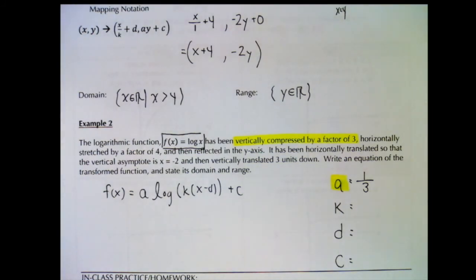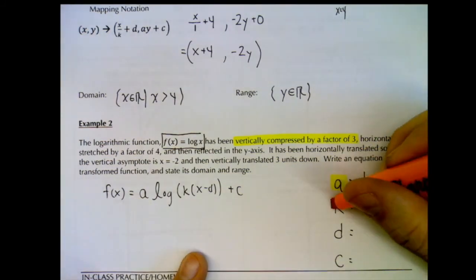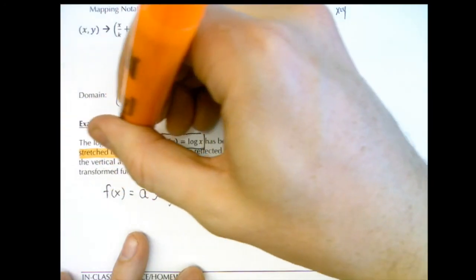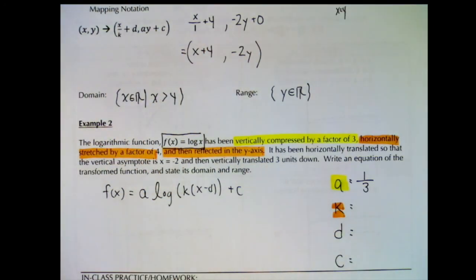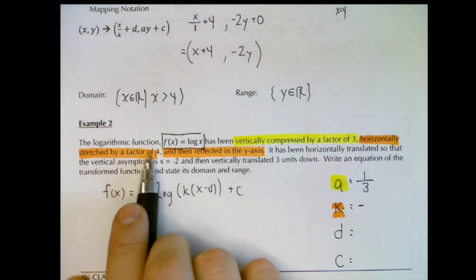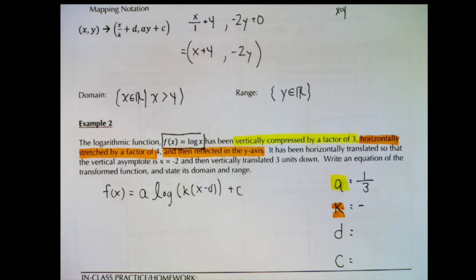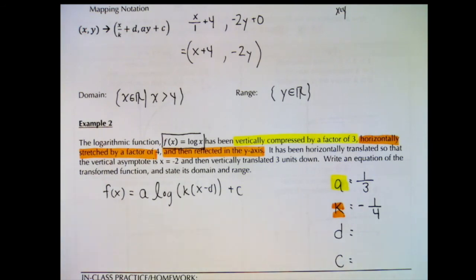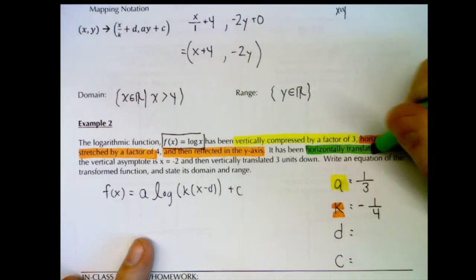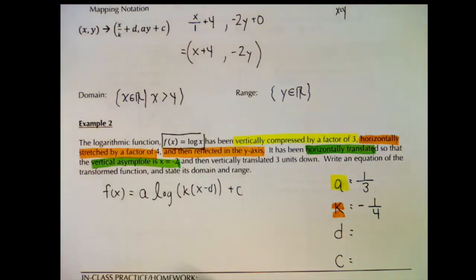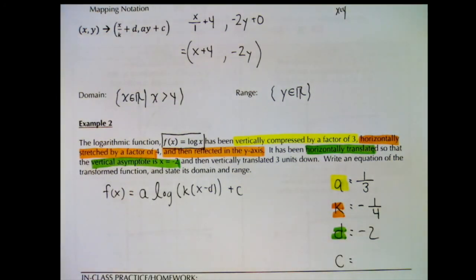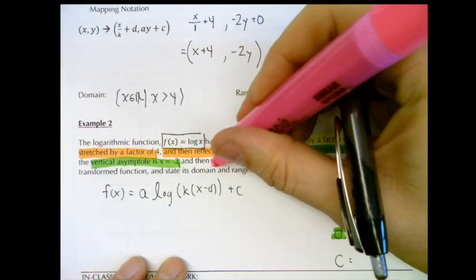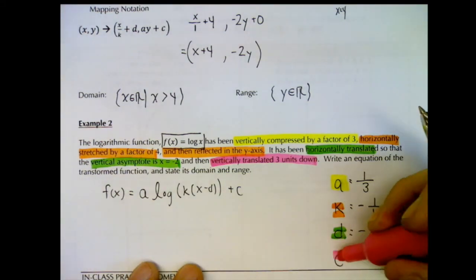A horizontal stretch by a factor of 4 with a y-axis reflection: a horizontal stretch means k is between 0 and 1, and by a factor of 4 means k is one quarter, but negative because of the reflection, so k equals negative one quarter. For the horizontal translation: the vertical asymptote is at x equals negative 2, meaning we've shifted left, so d equals negative 2. Vertically translated 3 units down: that's c equals negative 3.